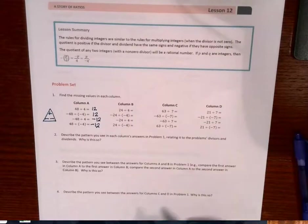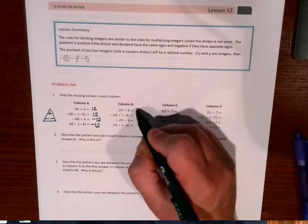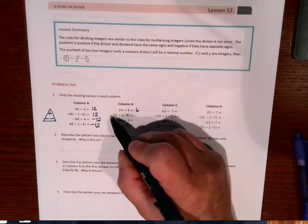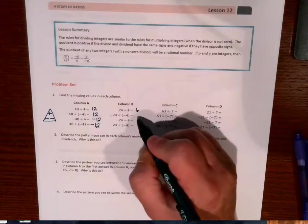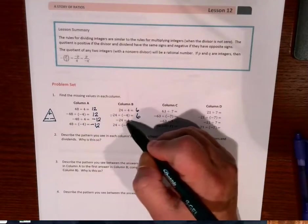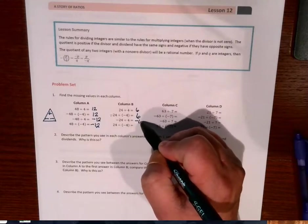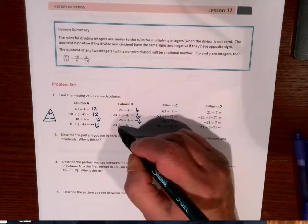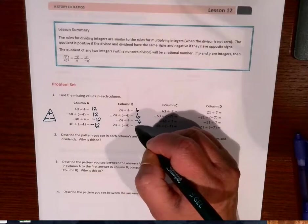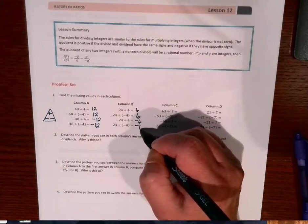So looking at column B, 24 divided by 4 is 6. Negative 24 divided by negative 4, there's my two negatives so my answer has to be positive. Negative 24 divided by 4 is equal to a negative 6 because I have to have two negatives in a problem if there's a positive. And 24 is also a negative 6.